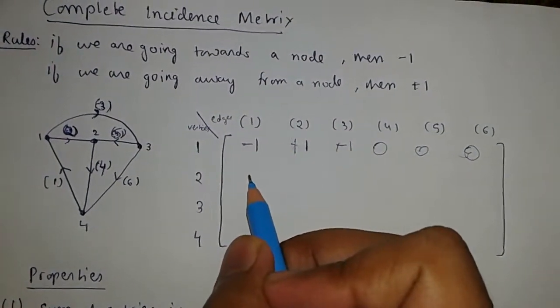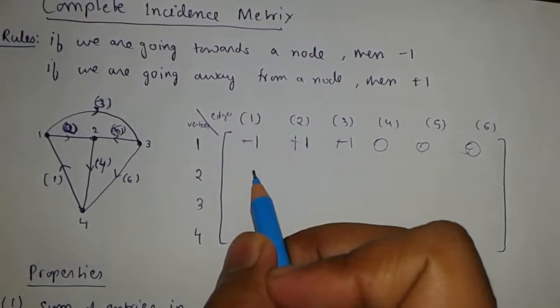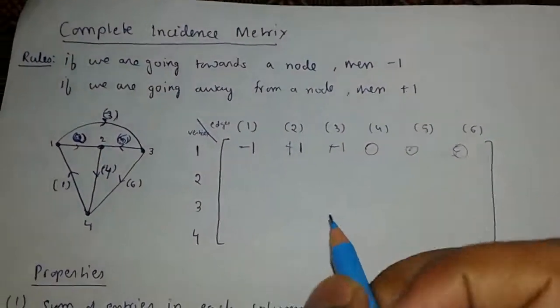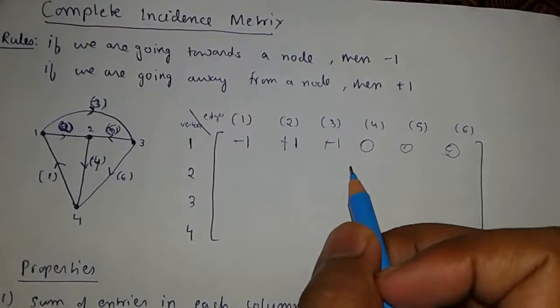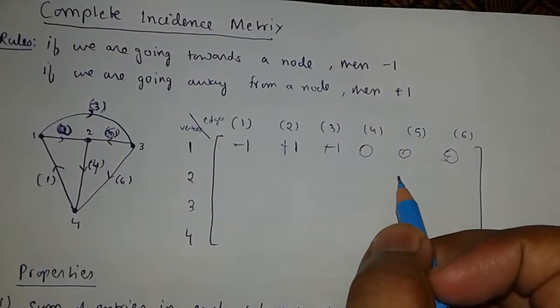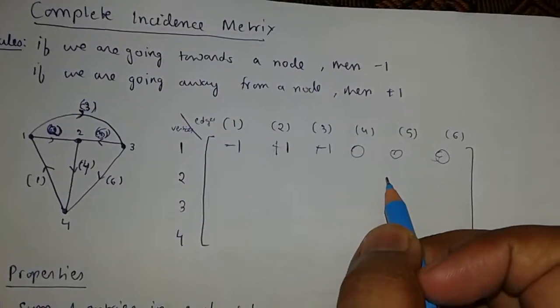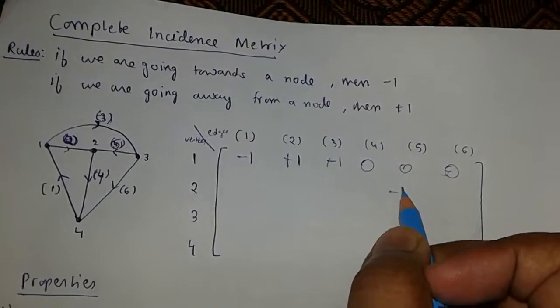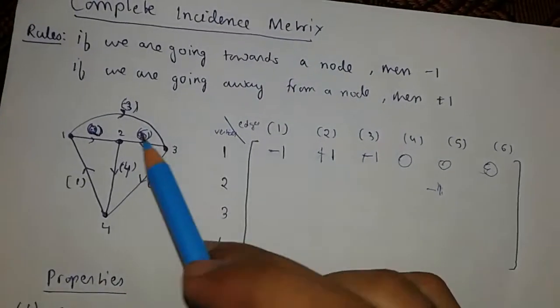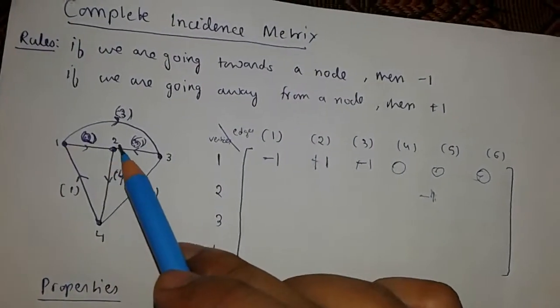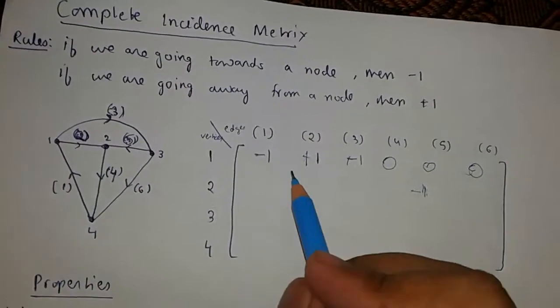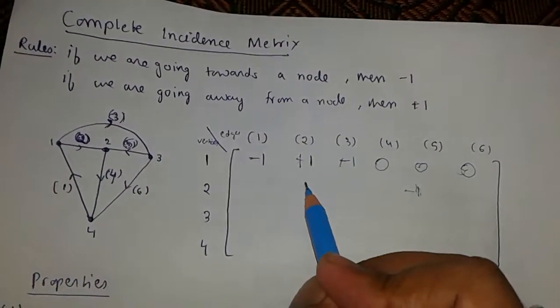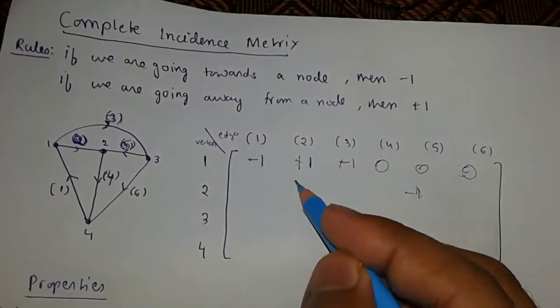For node two: edge five is going towards node two, so we take minus one. Edge two is also going towards node two, so it is minus one.